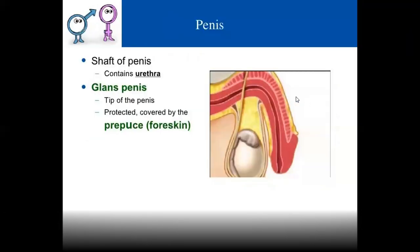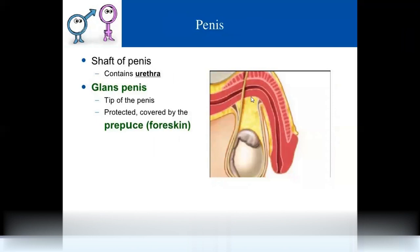The penis has a shaft and the end part is called the glans penis. The glans penis is covered by skin called the foreskin, also known as the prepuce.